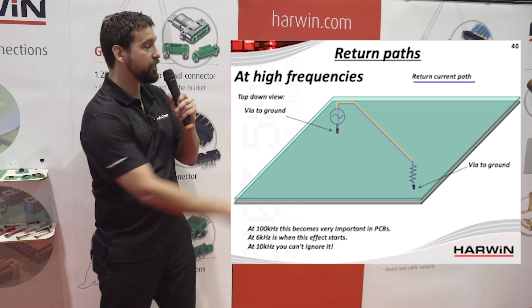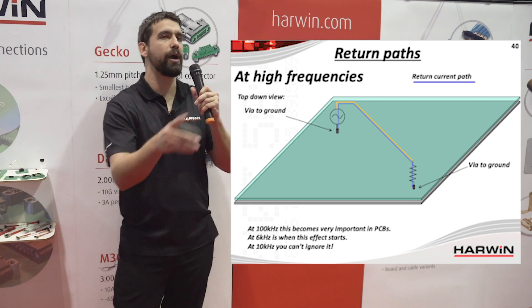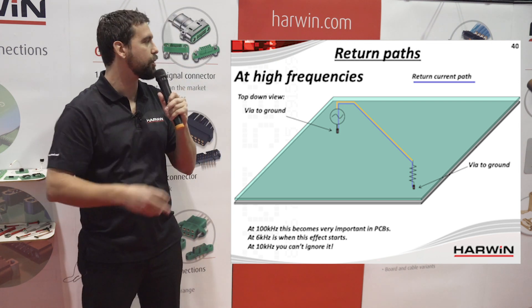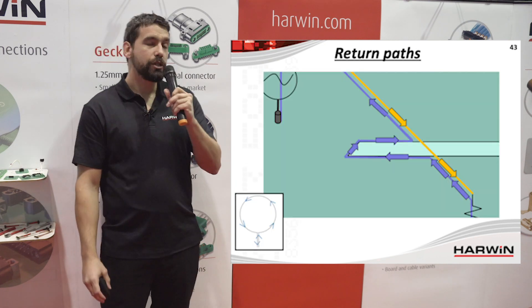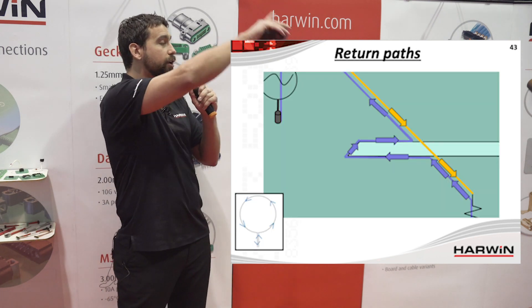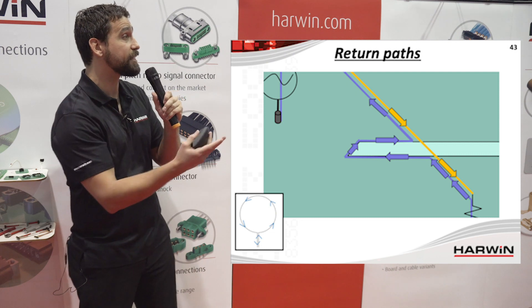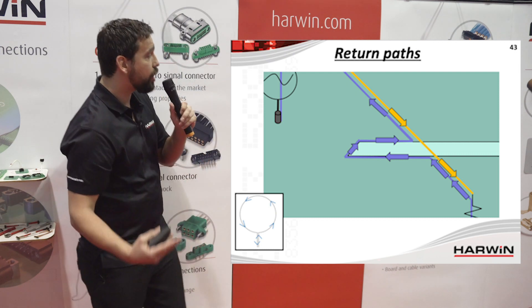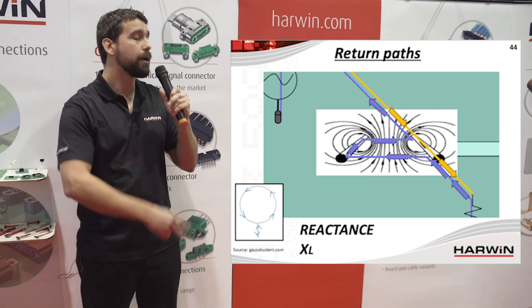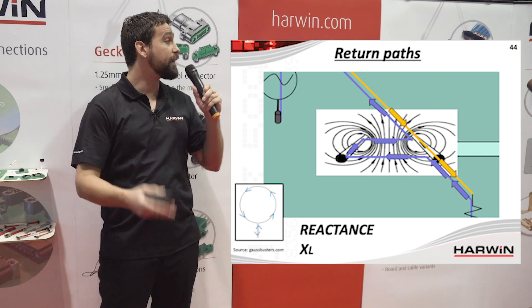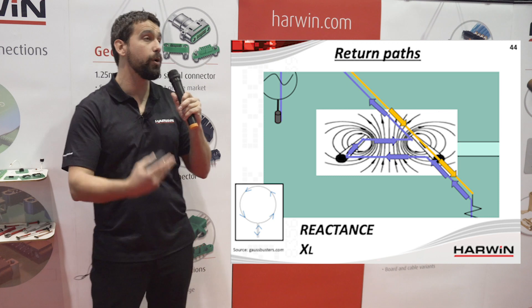Going back to the original example — I've simplified it: a straight line, and say I put a through-hole component in exactly the wrong place, or borrowed a little bit of the ground plane to reroute a track. I've snipped a bit out of it. The forward current goes over the top of that gap, and the electrons trying to take the least path of impedance have to route themselves around this gap I've just created. The result: you end up creating a magnetic field — you've created a loop, you've put an inductor into your circuit just by borrowing a little bit of that ground plane.